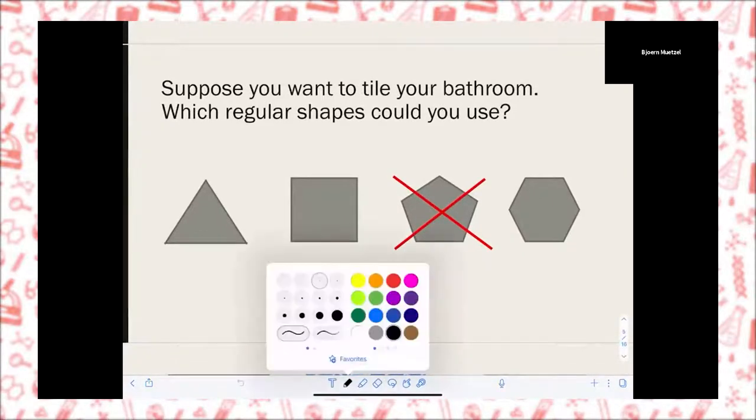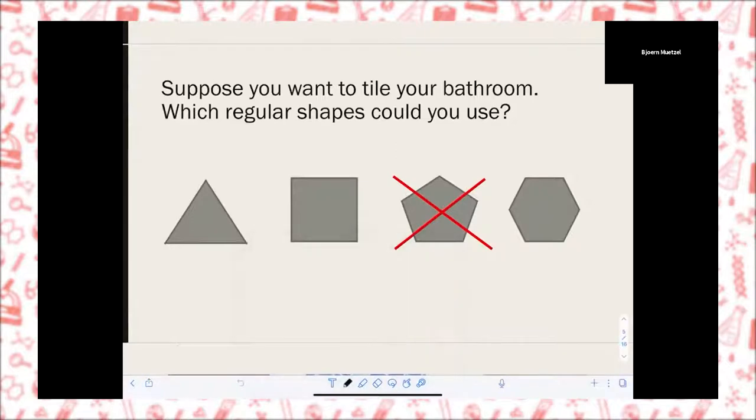Can you use a triangle? Yes. Can we use the square? Yes, we've seen that, right? Can we use the hexagon? Yes. What about the pentagon? Well, the pentagon doesn't work. Why not? If we look at a corner and we try to fill the corner with pentagons, we can put three pentagons in a corner, but then there will be a little gap. And there's no way we can fill this gap with another pentagon.